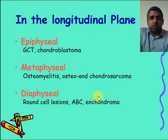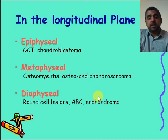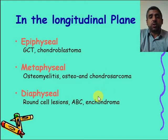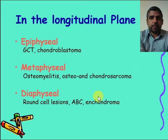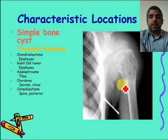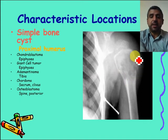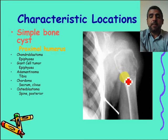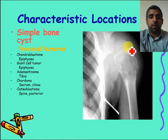In the longitudinal plane, the most common epiphyseal tumors are giant cell tumor and chondroblastoma. In the metaphyseal region, look for osteosarcoma and chondrosarcoma. In the diaphysis, look for round cell lesions like Ewing sarcoma, aneurysmal bone cysts, and enchondromas. For example, this simple bone cyst is metaphyseal, expansile, and well-defined — a benign-appearing lesion with a fallen fragment sign and an unfused growth plate, indicating a young patient.